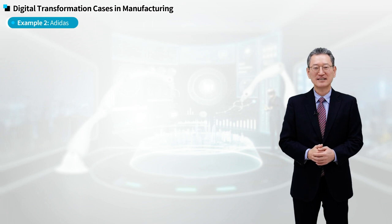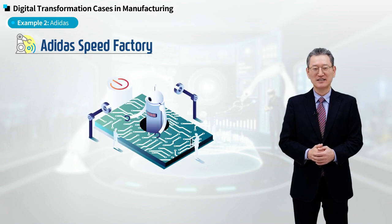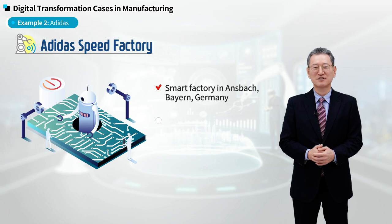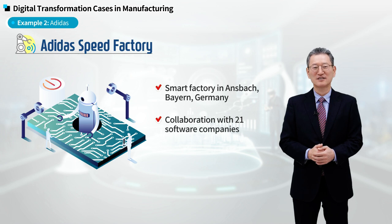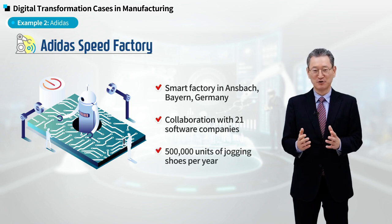The second case of digital transformation in manufacturing is the Adidas Speed Factory. This factory was built as an exemplary case of a Smart Factory in Ansbach, Bayern, Germany, through the collaboration with RWTH Aachen Technical University, Adidas, and 21 software companies. It was designed to produce 500,000 units of jogging shoes per year.